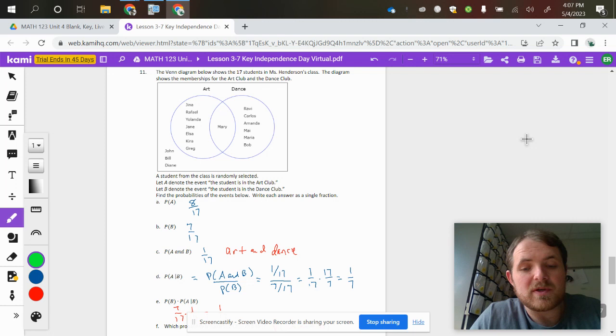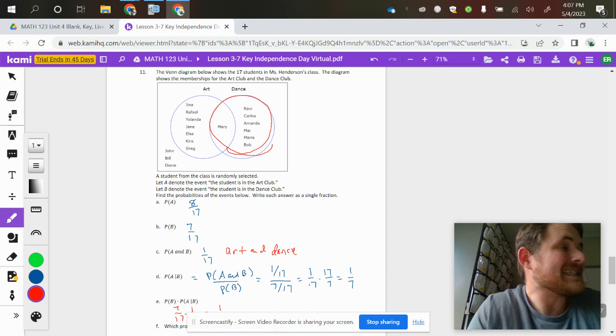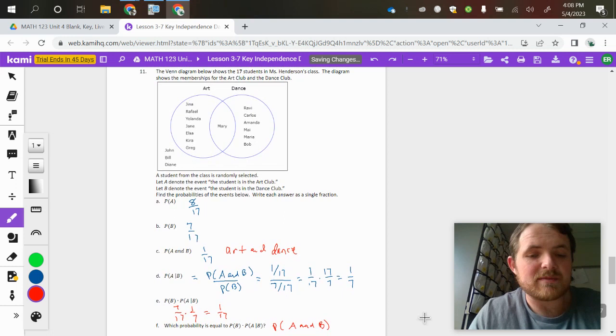When you keep change flip those, 1 out of 17 times 17 over 7, you're left with a 1 out of 7 shot of selecting someone in art given that they had to be in dance. If you think about it, there's 7 kids in dance, so once you've eliminated all these other people, the odds of selecting Mary is a 1 out of 7 chance.